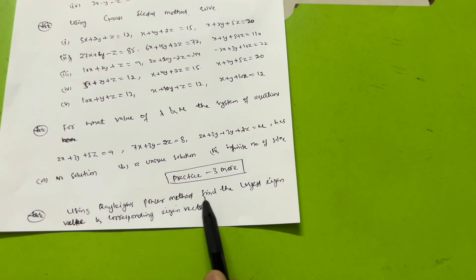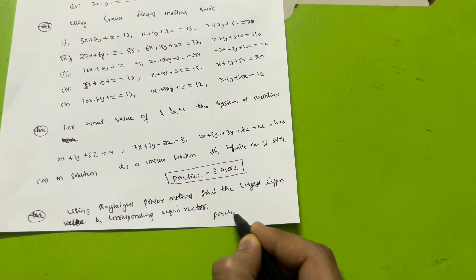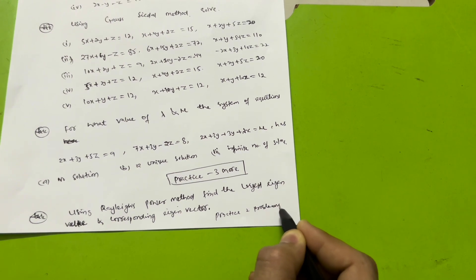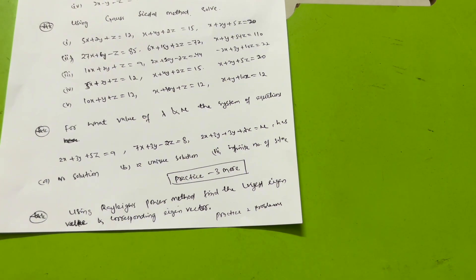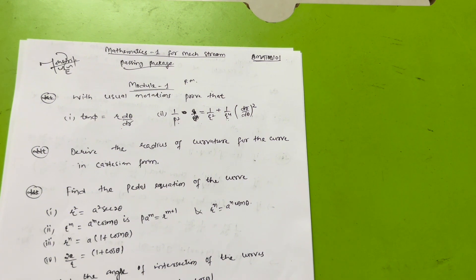Lastly, using Rayleigh's power method, find the largest eigenvalue and corresponding eigenvector — practice only two problems from previous year papers. The papers will be available on my Instagram account, and I will also provide the link in the description box so you can access all previous year question papers. This is all about today's video — make sure you share this video with all your friends and batch mates who are struggling in mathematics. Thank you.